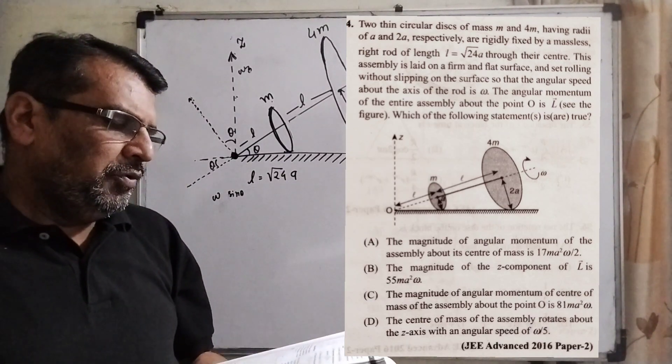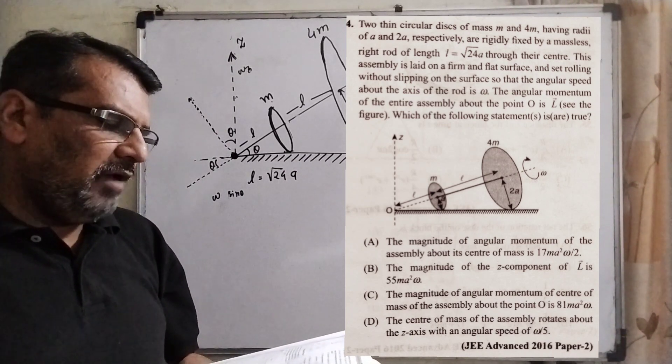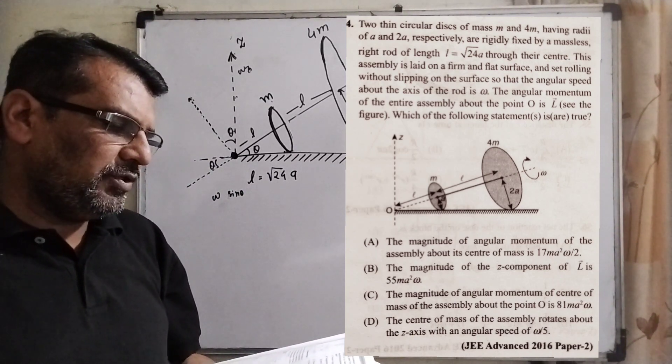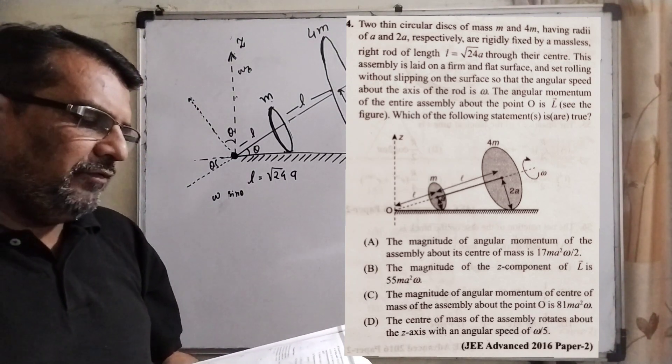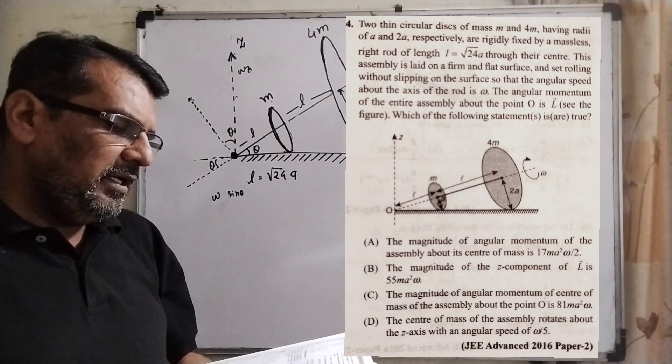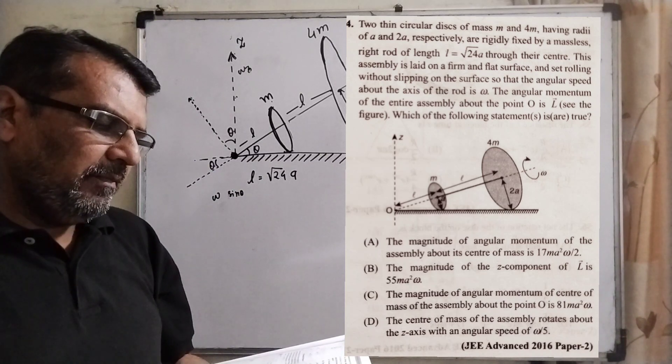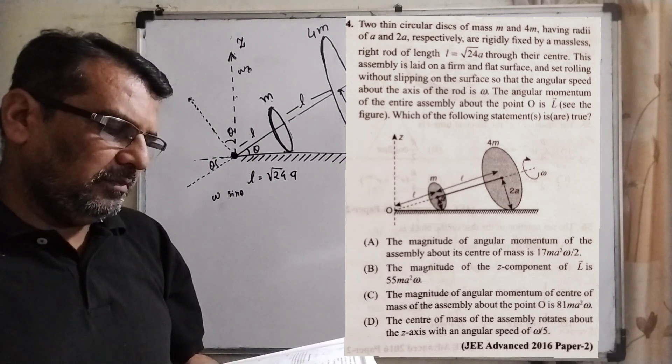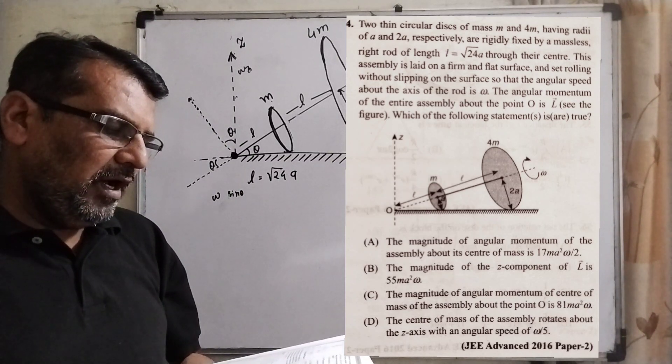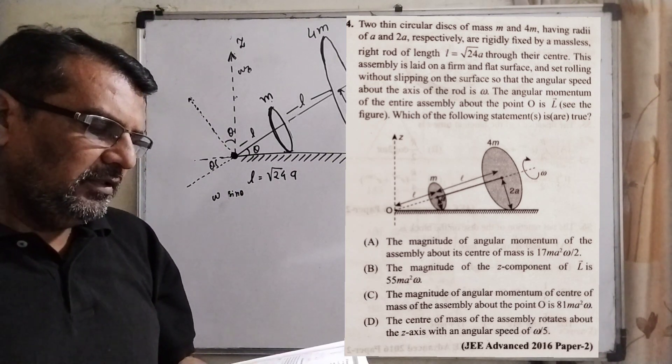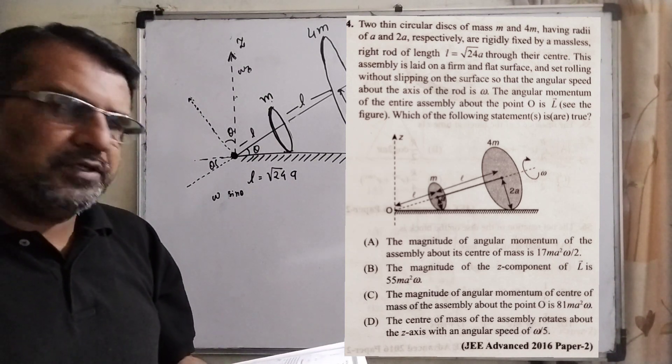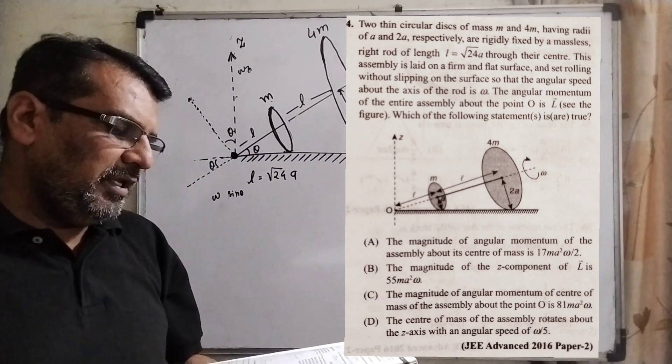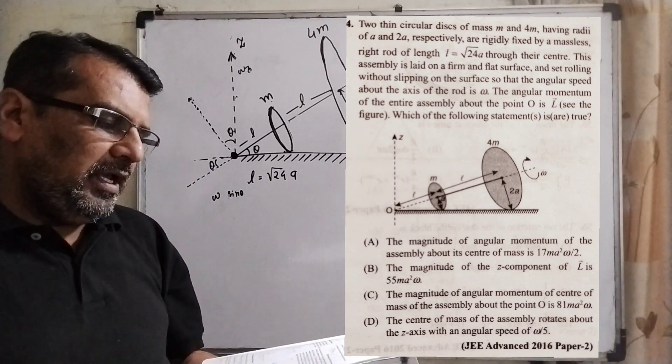Now what the question says: two thin circular disks of mass m and 4m having radii of a and 2a respectively are rigidly fixed by a massless right rod of length l equal to root 24a through their centers. This assembly is laid on a firm and flat surface and set rolling without slipping so that the angular speed about the axis of the rod is omega. The angular momentum of the entire assembly about point O is L vector. Which of the following statements are true? This is a multiple choice question. Here you have given four options.